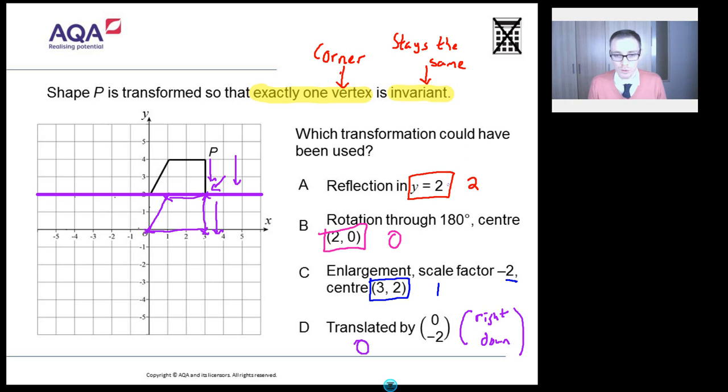So I think we've gone through where people would go wrong with this. So y equals two. It's a line of reflection that's on the line to end up with two invariant. Rotation to zero. I think if you got this the other way around and you put zero two, you're going to end up with rotating around that point. And maybe you'll end up with one point invariant there, but you've got your coordinate wrong. Enlargement is looking good. Translation, not looking so good.